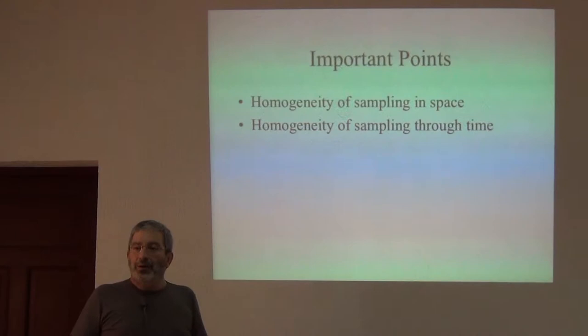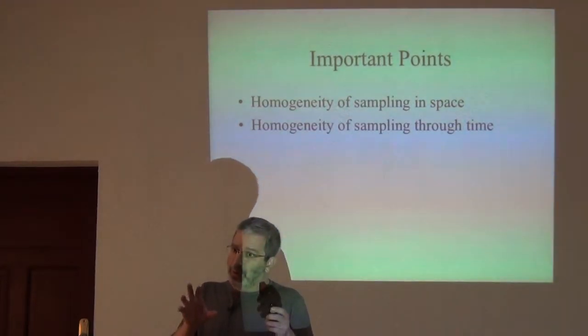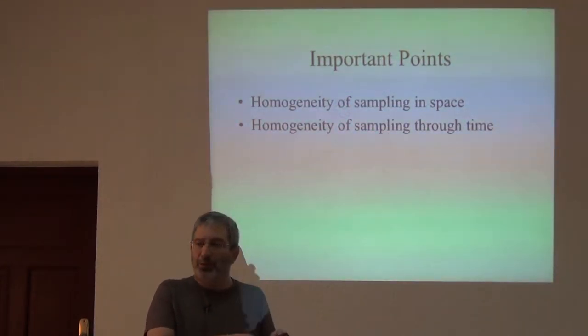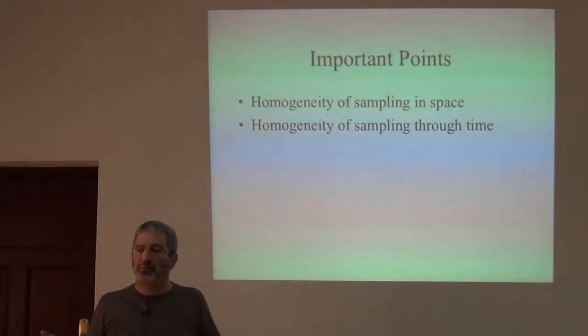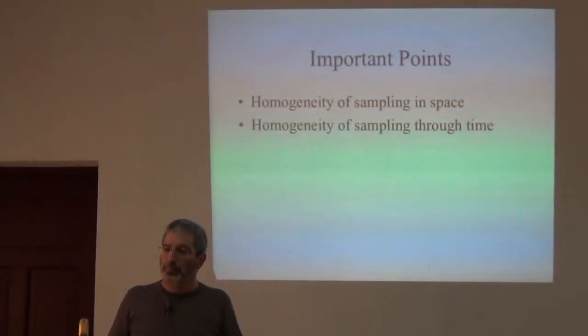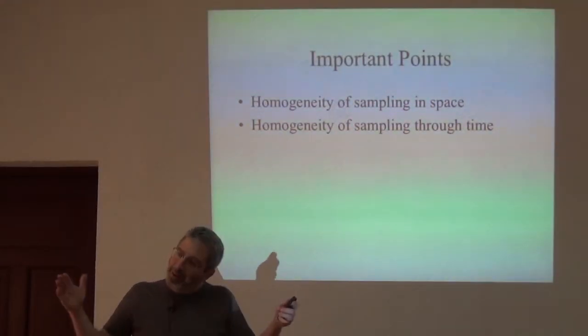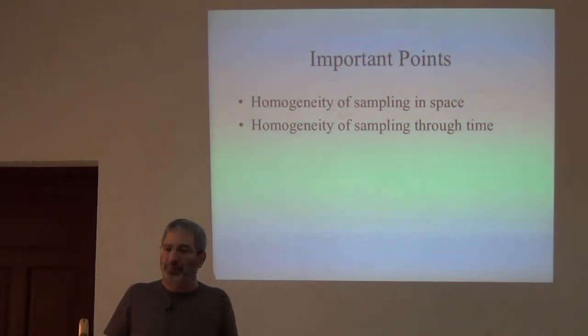This is another hard one. Homogeneity of sampling through time. So I said an inventory is defined with respect to place and time. So it will be an inventory of the birds, herps, and plants near chimpanzee camp in early March of 2015. So that at least constrains our definition of time.